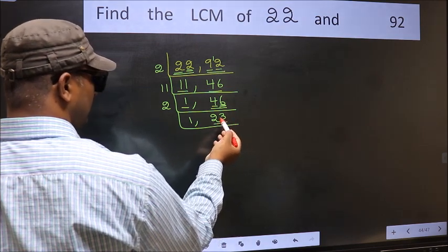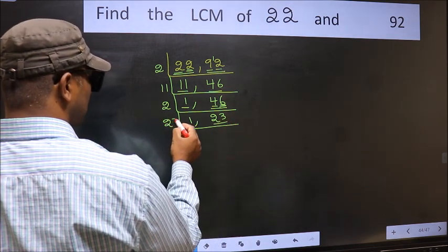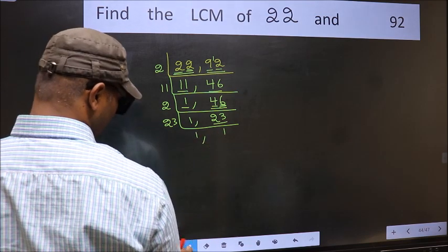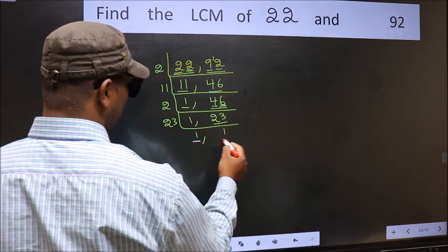Now here we have 23. 23 is a prime number, so 23 once is 23. So we got 1 in both places.